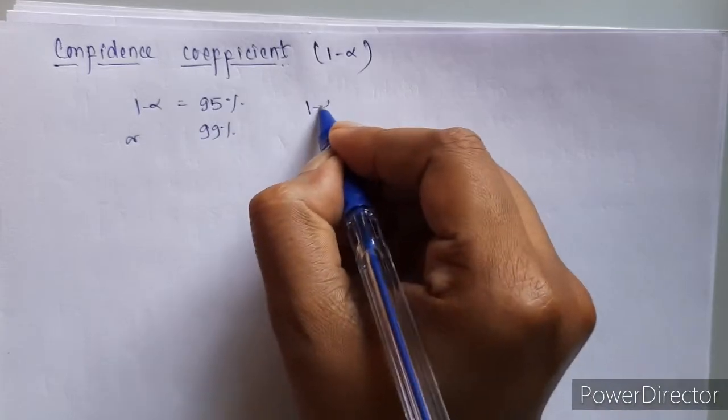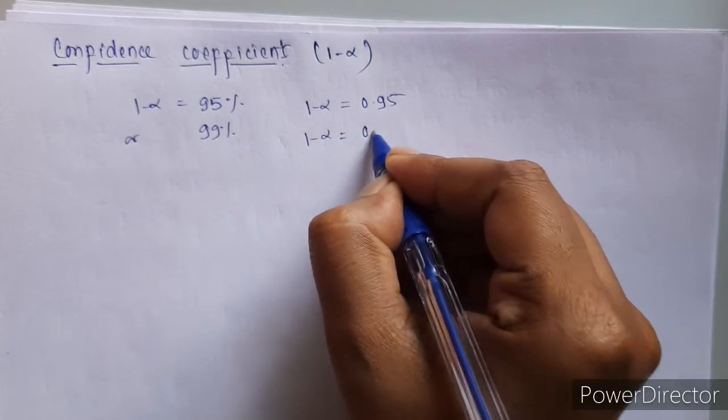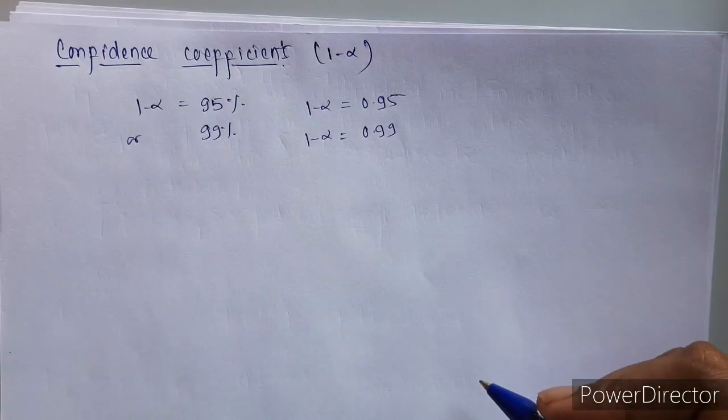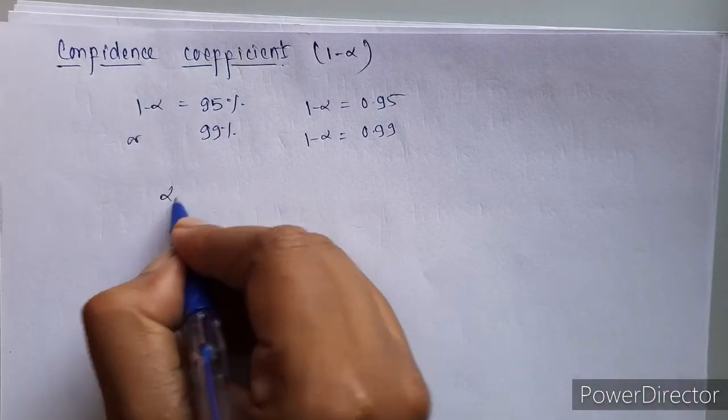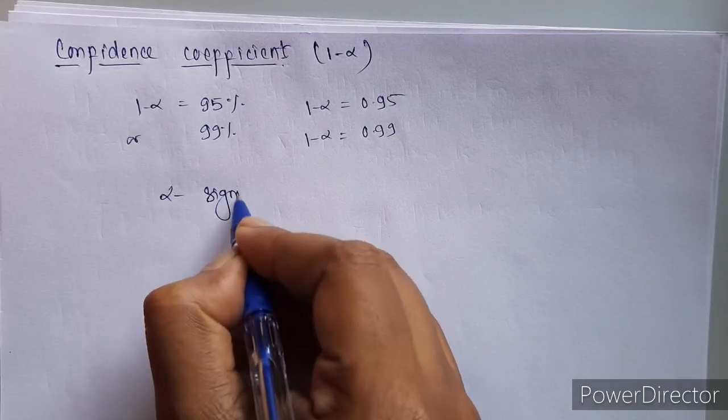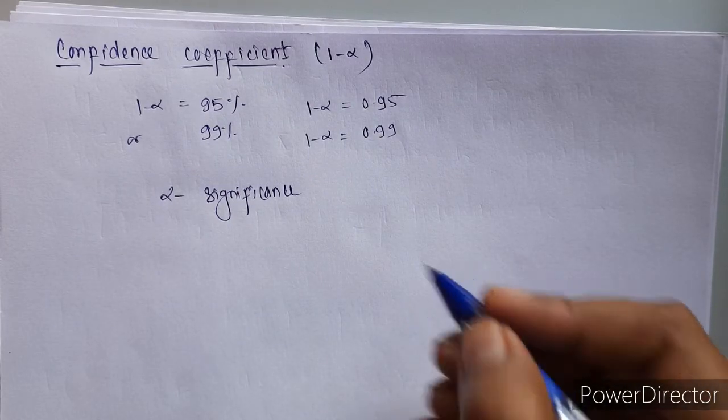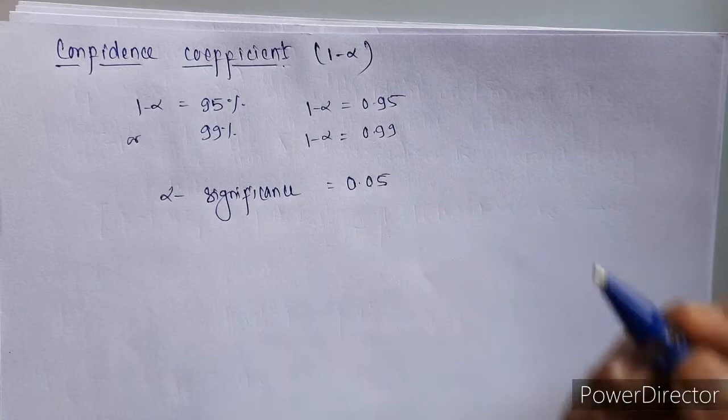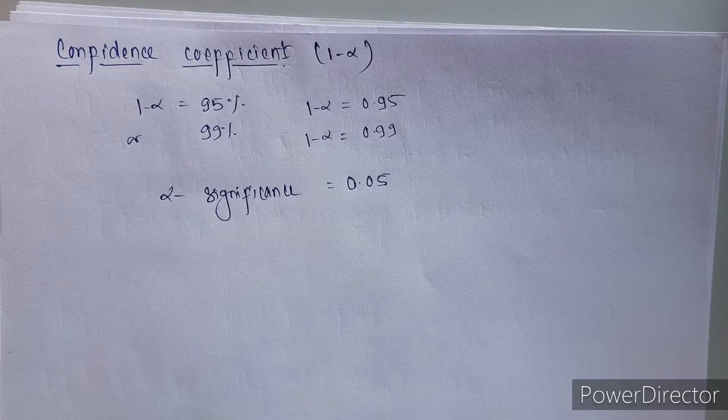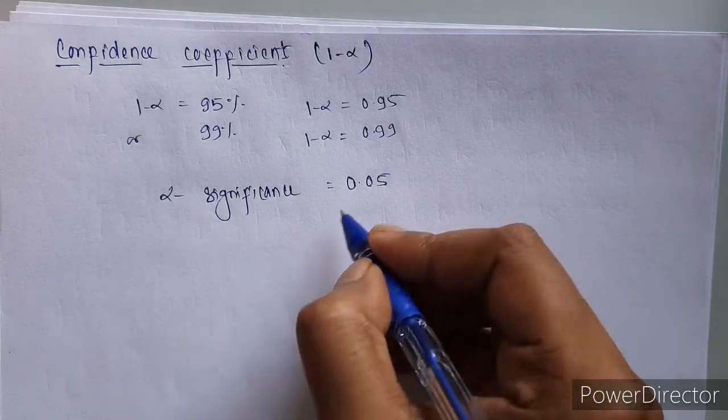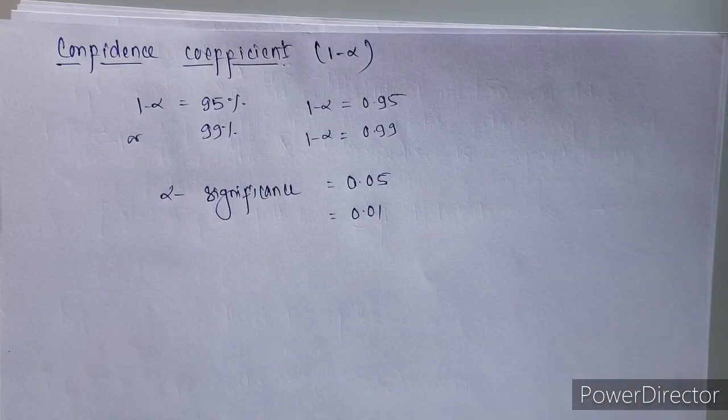So if it is 95 percent, we write it as 0.95, and 99 as 0.99. Now if your level of confidence is 95 percent or 0.95, then this alpha, that is level of significance, will be 0.05 or we can say it is a 5 percent level of significance. And if it is 99 percent, your level of significance will be 0.01 or we can say 1 percent level of significance.